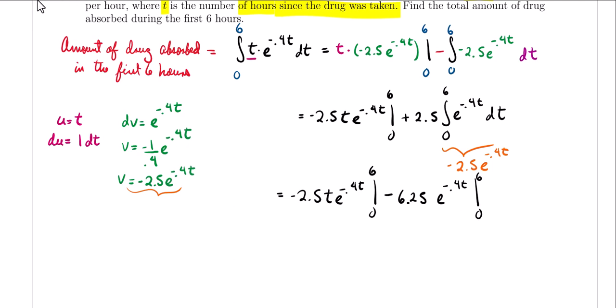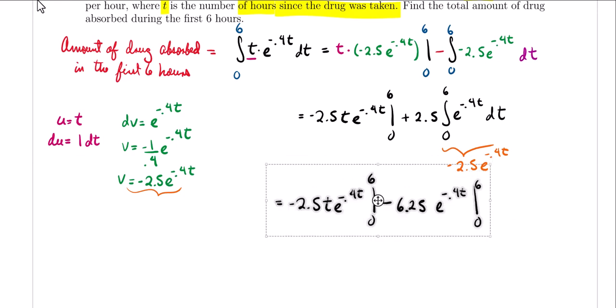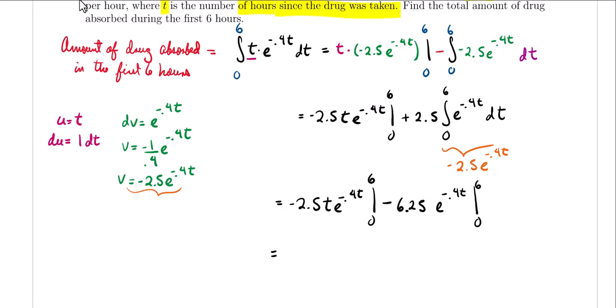Going ahead and plugging these values into the calculator, the final result comes out to approximately 4.322 milligrams. So there we go — that's the total amount of drug absorbed in the first six hours. Is that a lot? Well, I don't know the medication, so hopefully it's the right amount.